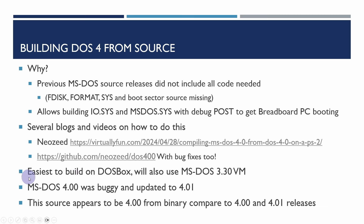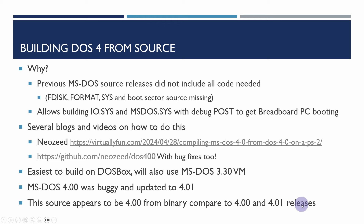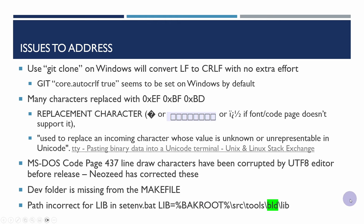It's probably going to be easiest to build this using DOSBox, but I also have an MS-DOS 3.30 virtual machine which I'll try to rebuild it on once everything's building cleanly. I'm aware that the original MS-DOS 4.0.0 was buggy and was updated to 4.0.1. From an earlier build it appears to be 4.0.0 given that it is almost binary identical to the 4.0.0 release, not 4.0.1.